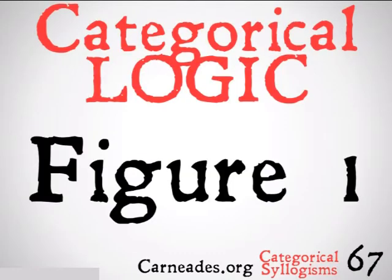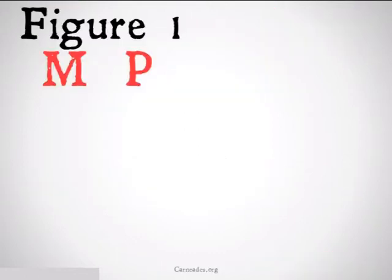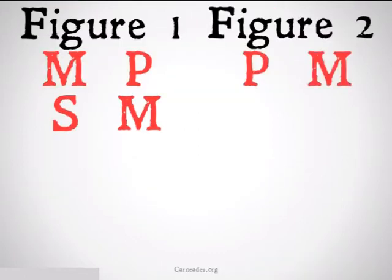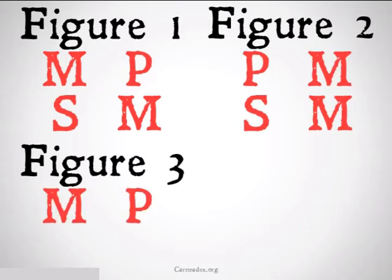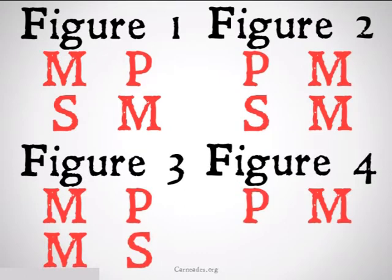Today we will be looking at Figure 1, which is a specific form of categorical syllogism. There are four different figures of categorical syllogisms. The figure of a categorical syllogism has to do with where the middle terms go in the first two premises.